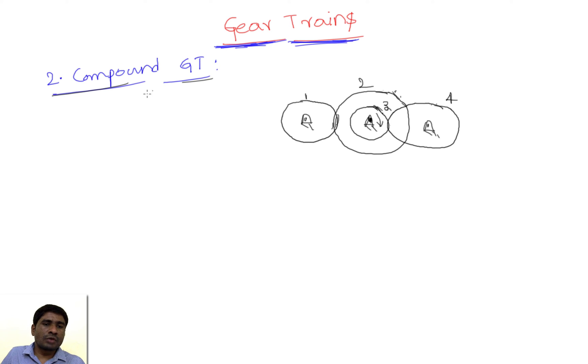In this case, we will see what happens to the speed ratio. We know that N2 equals N3, but T2 is not equal to T3. We need to remember this - the number of teeth on these two gears are totally different.